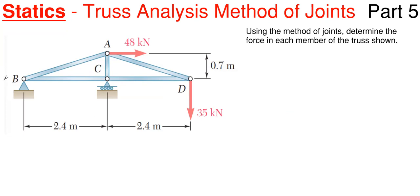We have a pin over here at B which means we are going to have a horizontal reaction and a vertical reaction, which we'll call BX and BY. We have a roller here at C which we are going to call CY. So what I'm going to do first is solve for these unknown reactions and I'm just going to throw on some assumption arrows here.